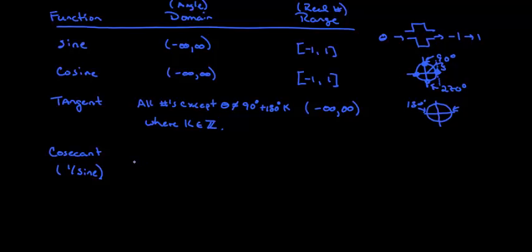so on and so forth. So we're going to say all numbers except angles, the angles can't be equal to 180 degrees times k. So k is an integer.